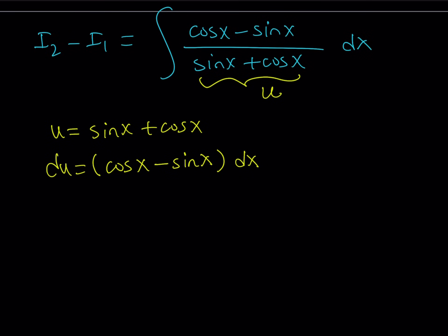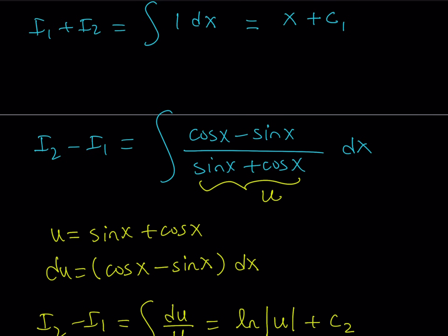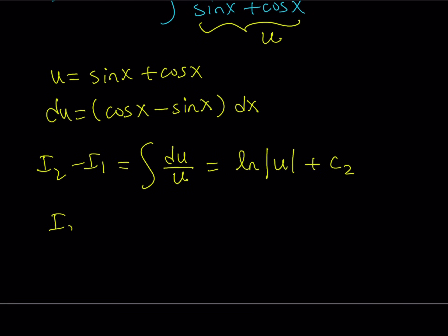So what is that going to give you? I got the numerator, I got the denominator, everything looks good. So i2 minus i1 can be written as du over u. How do you integrate 1 over u du? It's ln, the natural logarithm. I use ln for natural logarithm. So this is going to be ln absolute value of u plus c2. I want to use a different constant because they don't have to be the same. Let's back substitute. So i2 minus i1 is going to equal ln absolute value of sine x plus cosine x plus c2.